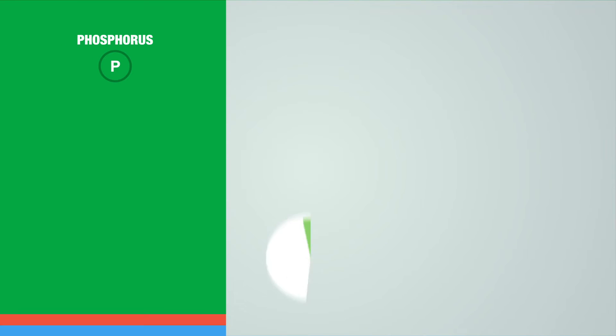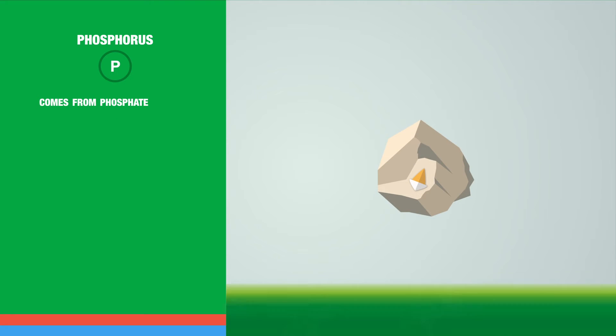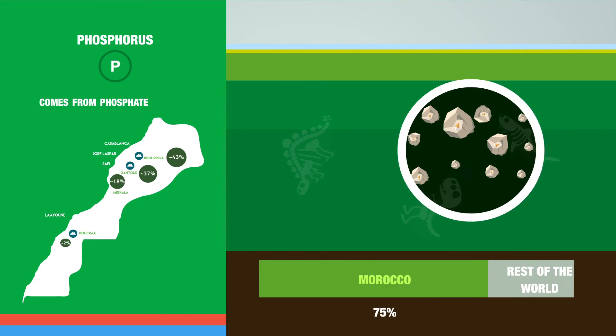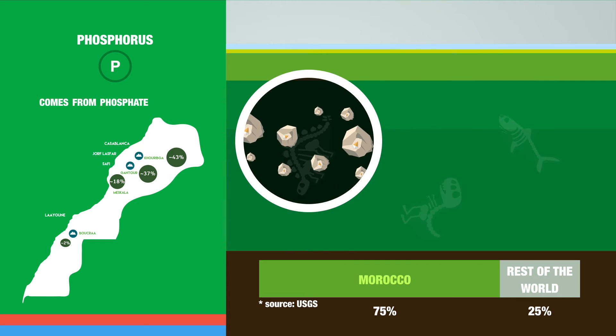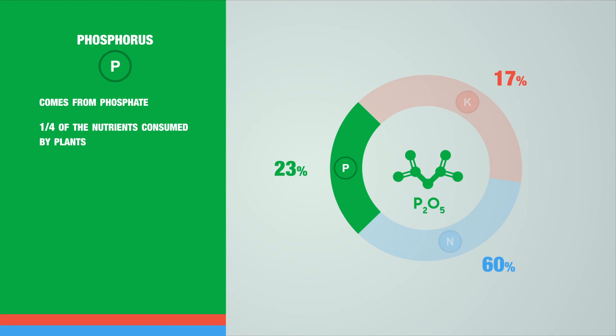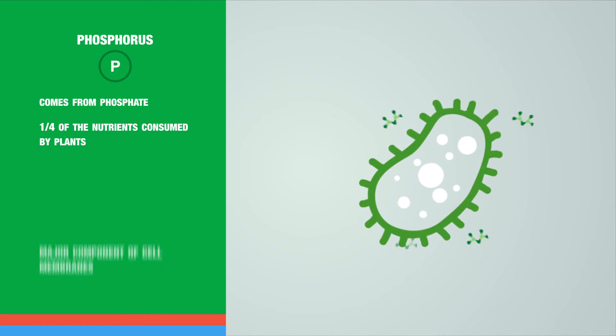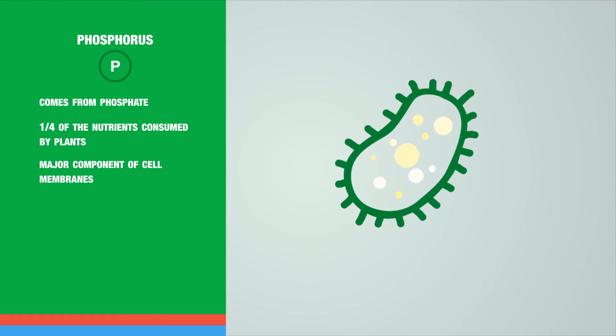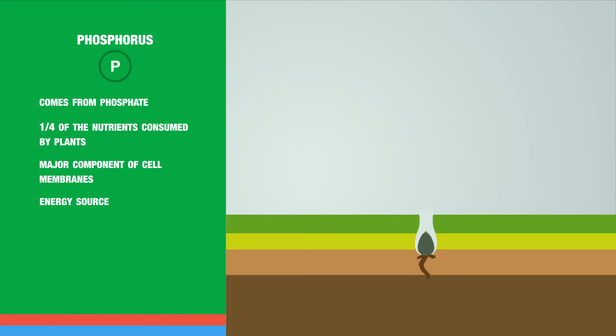Phosphorus is a vital element to all life forms. It comes from a rock called phosphate, of which Morocco has the largest reserve known to date. It represents a quarter of the nutrients consumed by plants, acting at the cellular level as a major component of cell membranes and as a source of energy. This enables the roots to develop and the plant to grow.